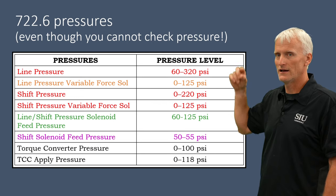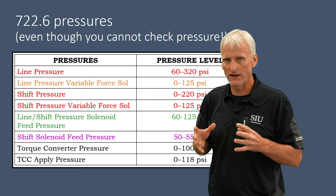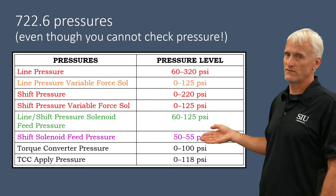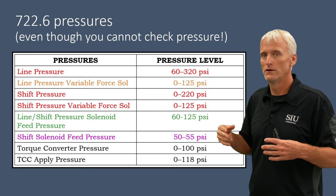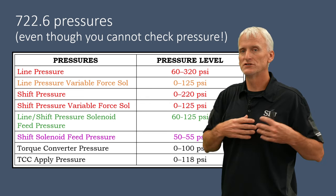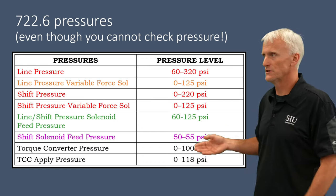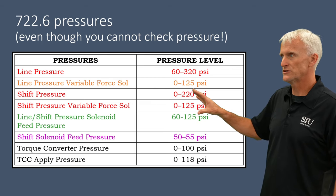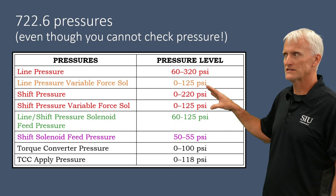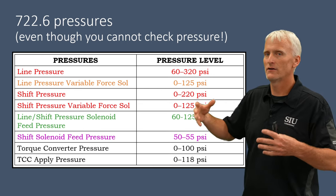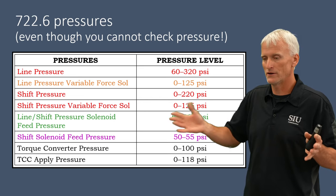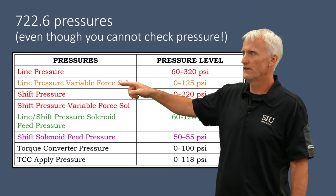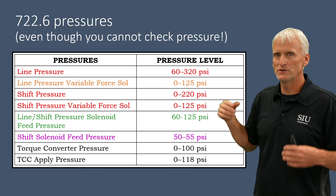I created a separate video on solenoid regulator valves because it's such an important valve. There's also a shift solenoid feed pressure that knocks the pressure down even further to 50 to 55 psi for the shift solenoids — they don't need high pressure since all they do is shuttle command valves. The shift pressure and line pressure solenoids are fed with a maximum of 125 psi, and they can deliver anywhere between 0 and 125 psi. The shift pressure variable force solenoid output is 0 to 125 psi, and the line pressure variable force solenoid output is also 0 to 125 psi.